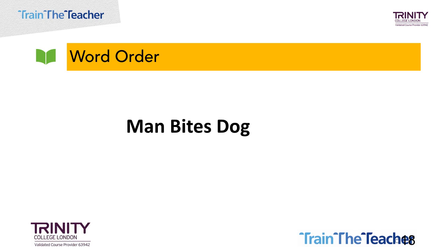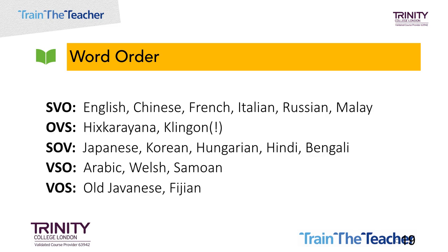But were you to translate this into an OVS language, such as Hykskaryana or Klingon, they would understand it as the dog biting the man, because of their particular language's word order. Different languages have different word orders. And in English, when we see a group of words, we assume they are in a particular pattern — SVO. This pattern, in combination with the meaning of the words in a particular context, is what we use to predict and make meaning.